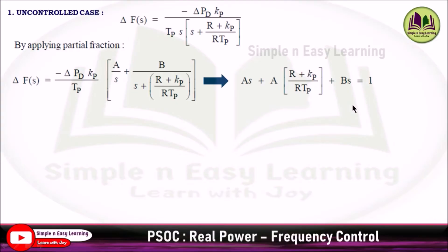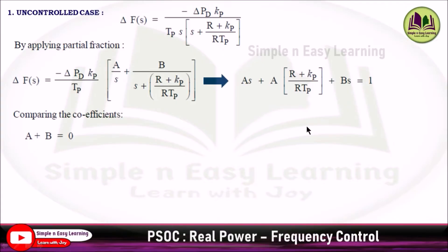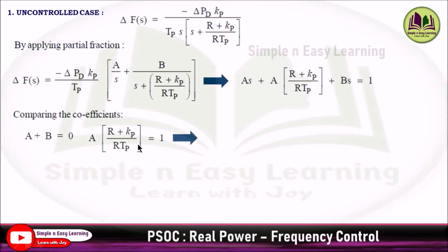Equating the coefficient of S: on the left-hand side the S coefficient is A and B, so A plus B equals 0 since there is no S term on the right-hand side. For the constant term, A times (R plus KP) divided by R times TP equals 1, so A equals R times TP divided by R plus KP. Substituting into the first equation gives B equals minus R times TP divided by R plus KP.